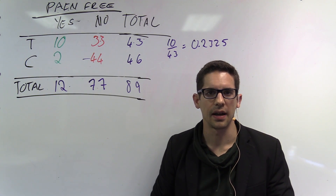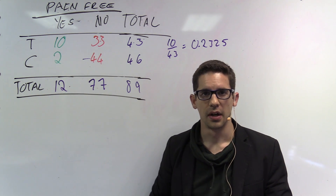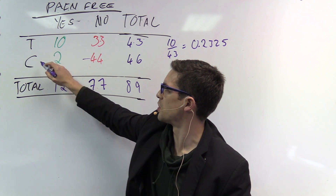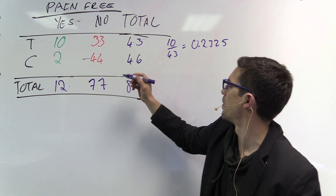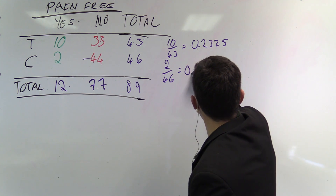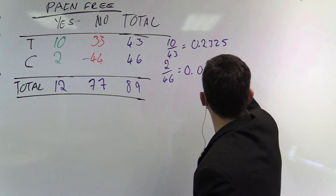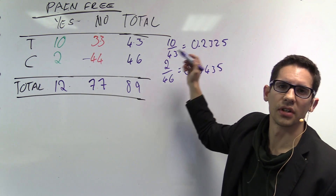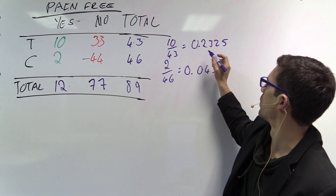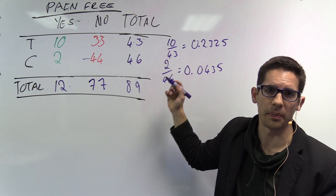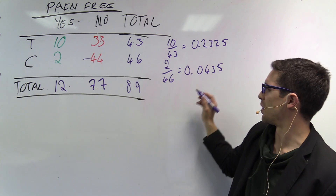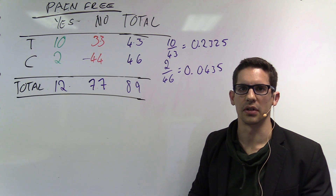For the second part, we look at the control group: 2 patients were pain-free out of 46 total. So the proportion is 2 divided by 46, which equals 0.0435 — less than 5%. So the treatment group had about 23% pain-free, while the control group had only about 4% pain-free.